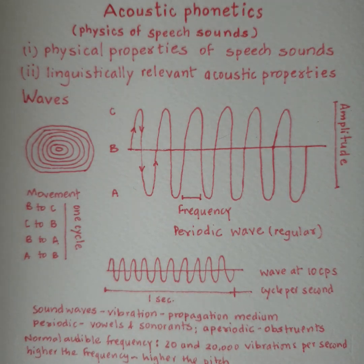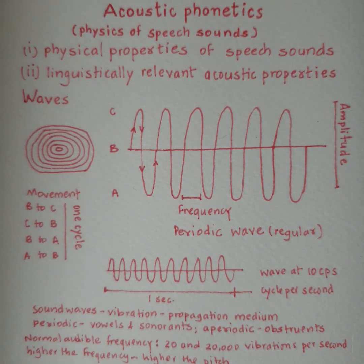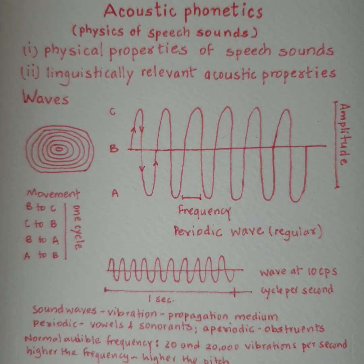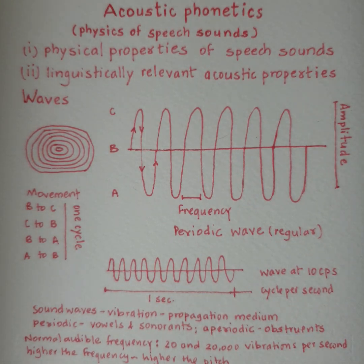These waves can be periodic as well as aperiodic. When it comes to vowels and sonorants, the waves are periodic — that means they are regular. But when it comes to obstruents, that is to say stops or plosives, fricatives, and affricate sounds, the waves are aperiodic.